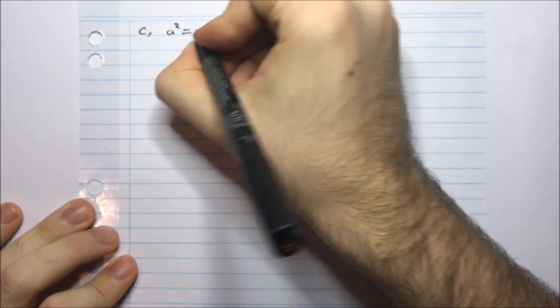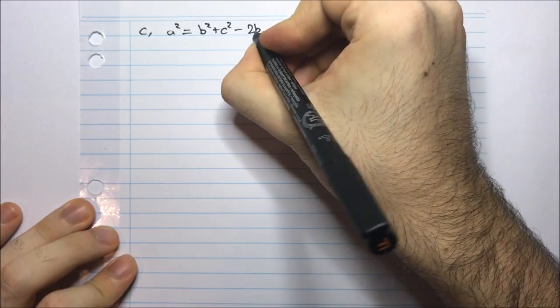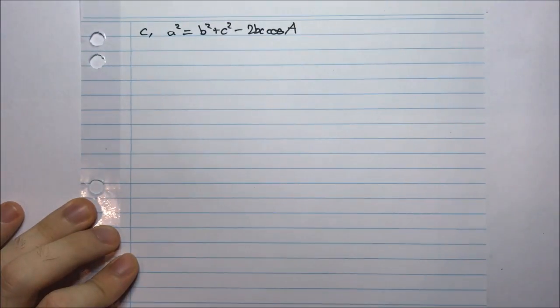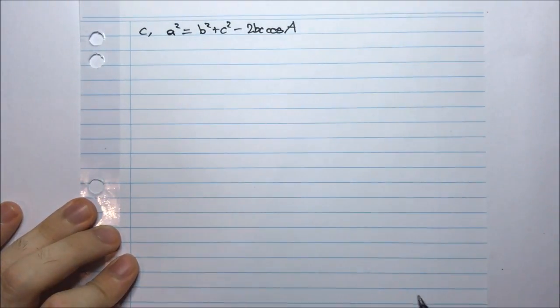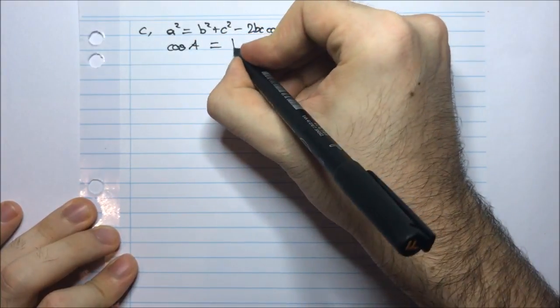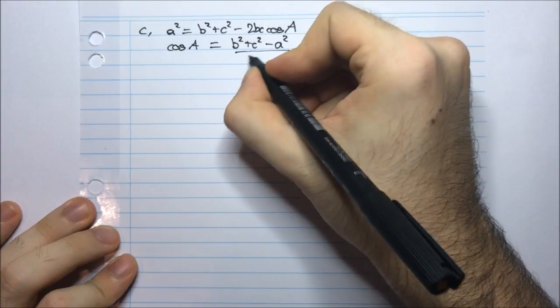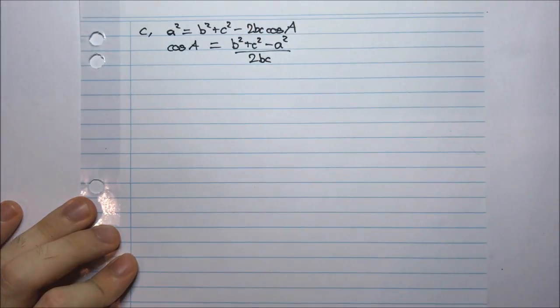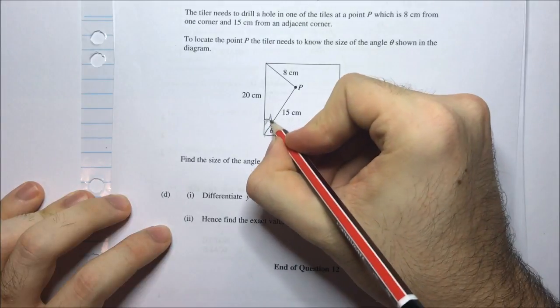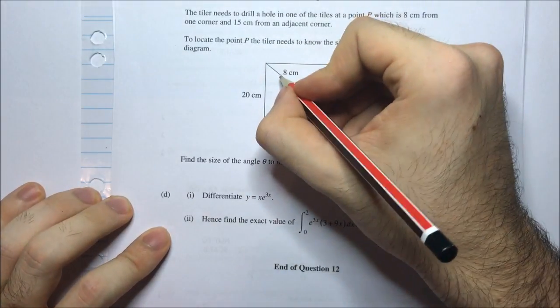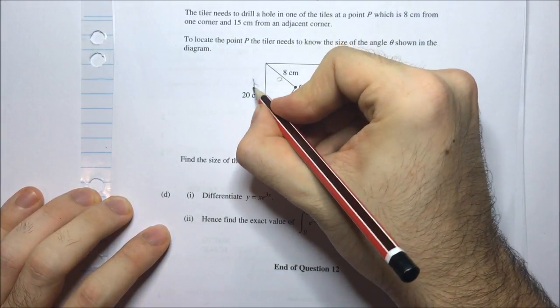The cosine rule is: a squared equals b squared plus c squared minus 2bc cos A. Rearranging to find the angle: cos A equals (b squared plus c squared minus a squared) divided by 2bc. In this triangle, the angle A opposite side a (which is 8) is what I want, with the other sides b equals 20 and c equals 15.